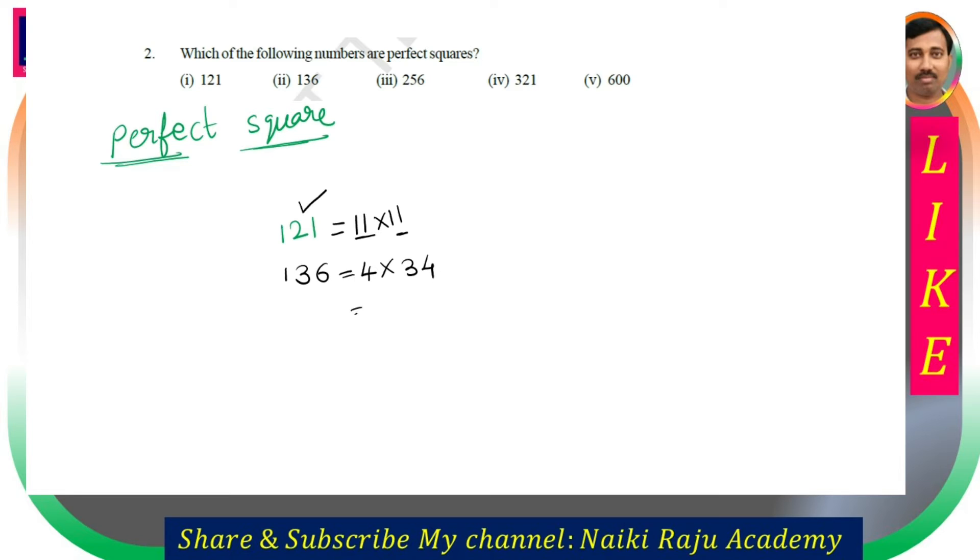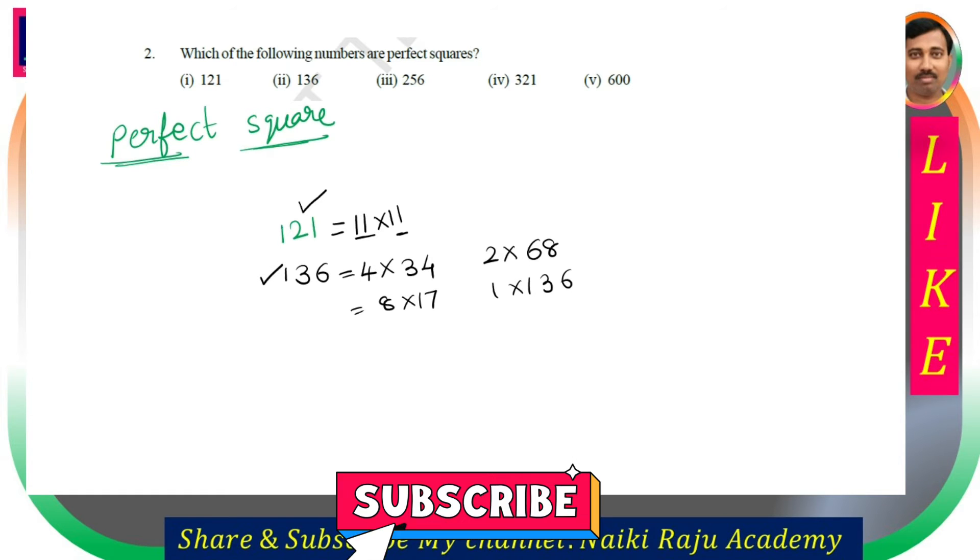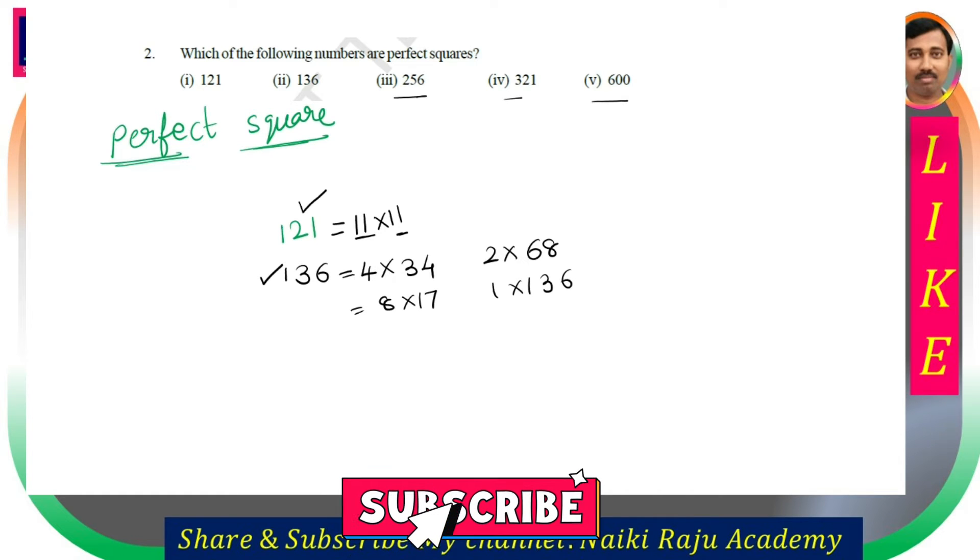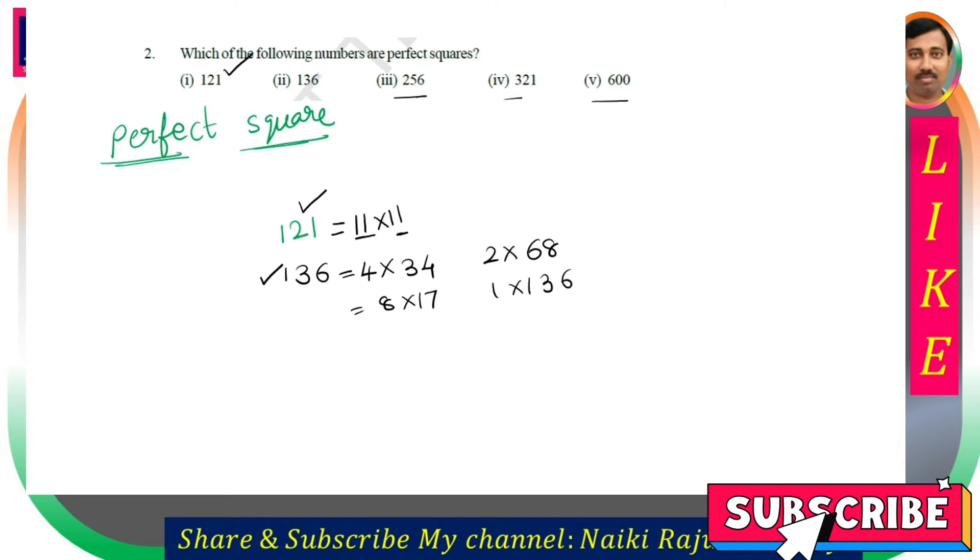Next is 136. 136 is not equal. We can choose 2 into 68, 4 into 34, 8 into 17, or 1 into 136. But these are not equal factors. So 136 is not a perfect square. The remaining three questions follow the same pattern - if there are no two equal factors, it's not a perfect square.